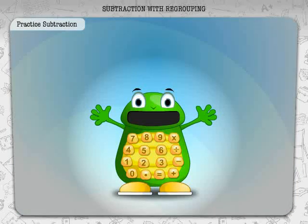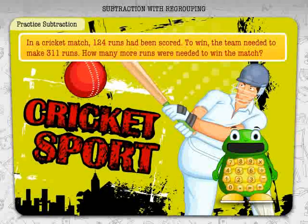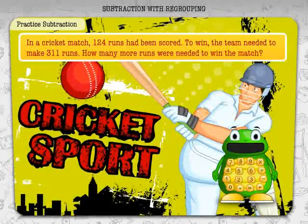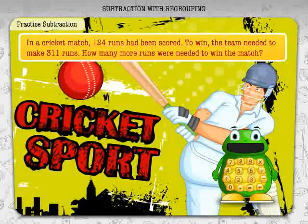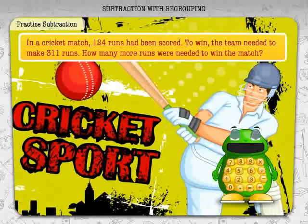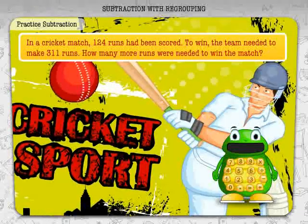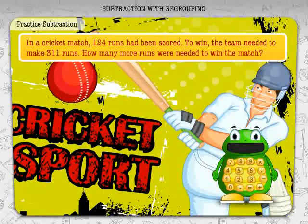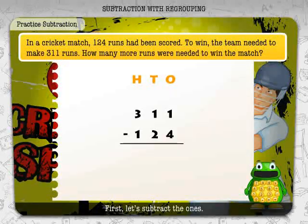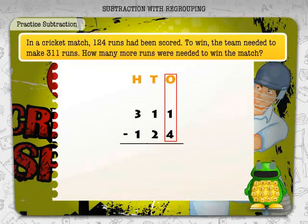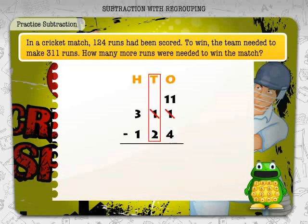Here is one more quick subtraction for you to do. In a cricket match, 124 runs had been scored. To win, the team needed to make 311 runs. How many more runs were needed to win the match? First let's subtract the ones. As one is less than four, we borrow a ten from the tens place. 11 minus 4 is equal to 7, so we write seven in the ones place.